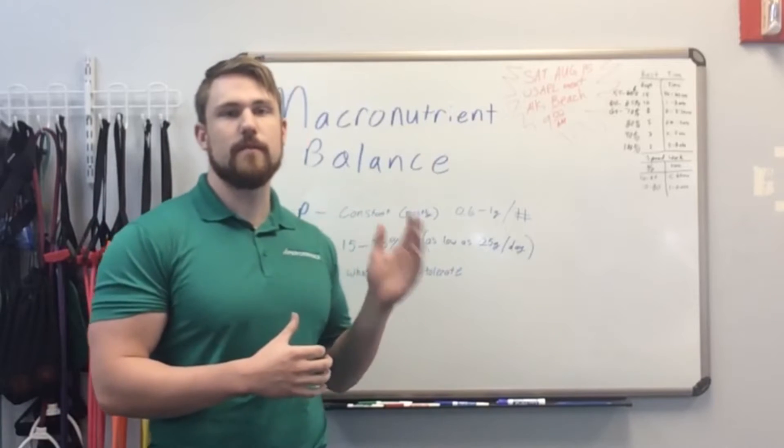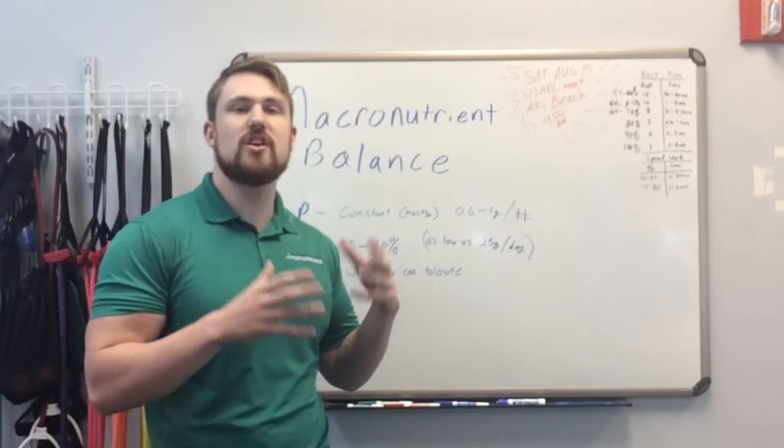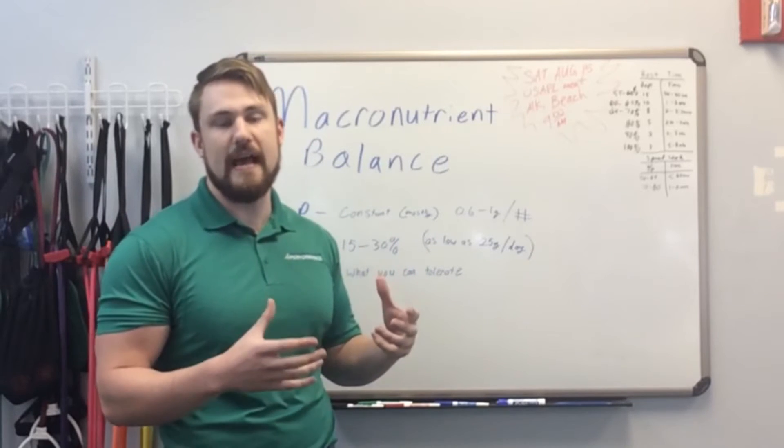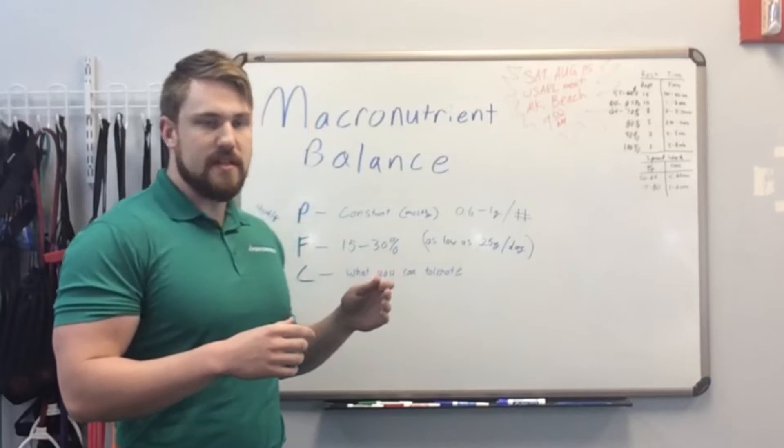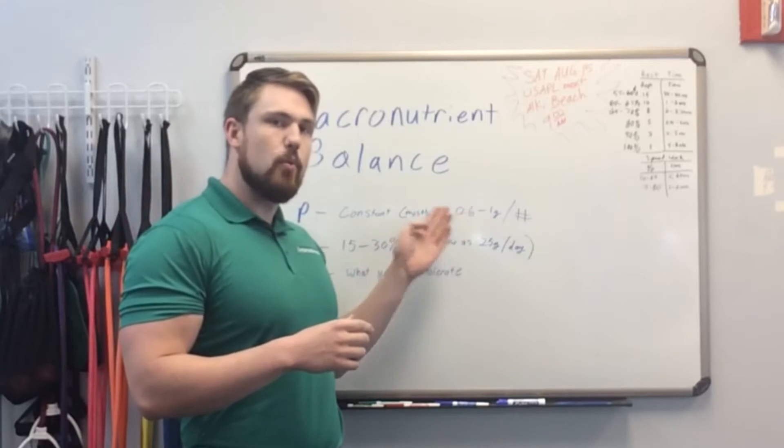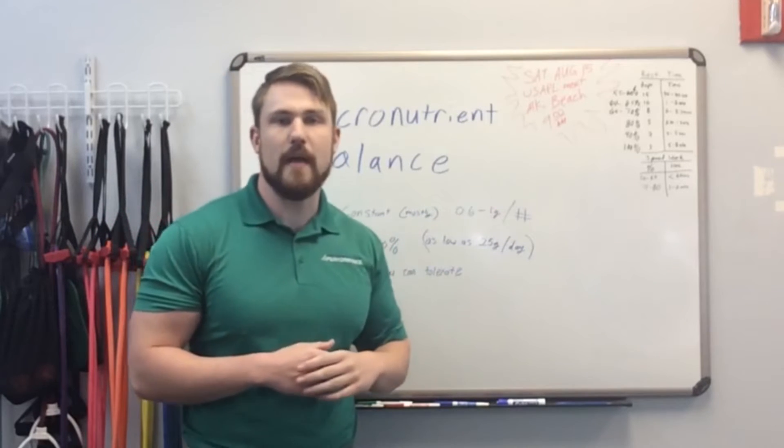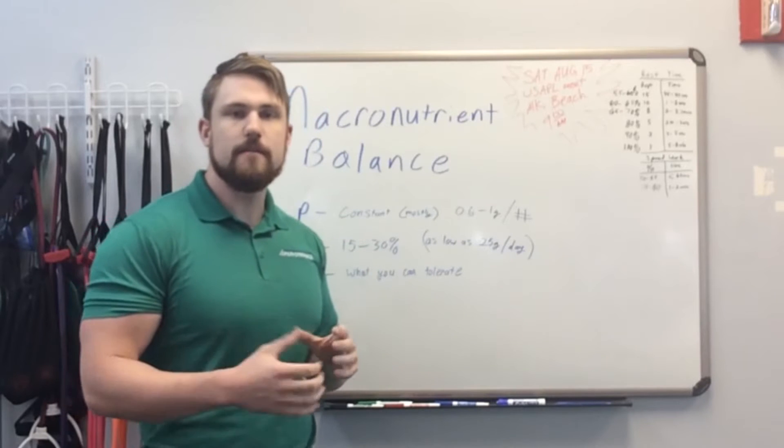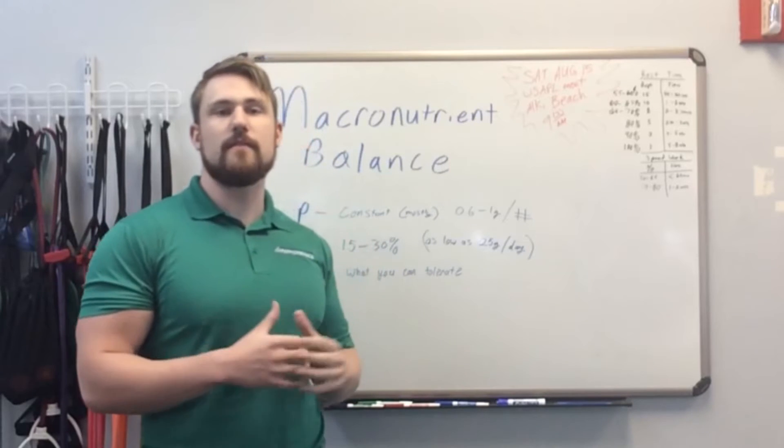The reason why we look at protein first is because it's the most constant macronutrient in your diet. When we look at protein, protein is going to be somewhere in the range of 0.6 to 1 gram per pound of body weight. That's going to fluctuate depending on a couple of different factors.